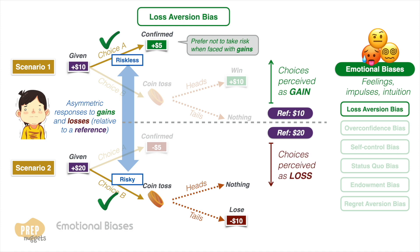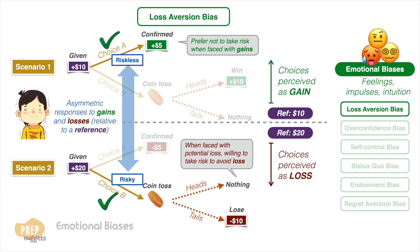In scenario two, the reference is twenty dollars, so the individual perceives the choices as a loss relative to the initial twenty dollars. When faced with a potential loss, the individual is willing to take risk in the hope of avoiding a loss. These conflicting responses exhibit investors' attitudes towards gains and losses — crucially, people fear losses far more than they value gains.